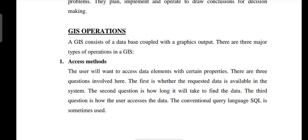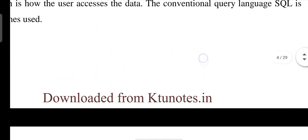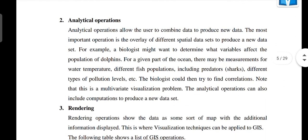GIS operations: A GIS consists of a database coupled with graphics output. You can draw data such as accident count, number of types of trees, air pollution components, and concentration. A user will want to access data elements with certain properties. There are three questions involved: first, whether the requested data is available in the system.